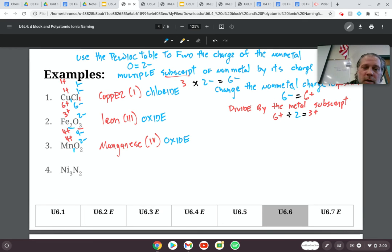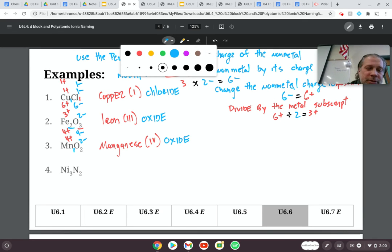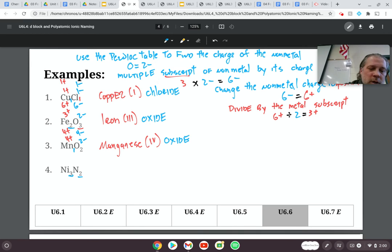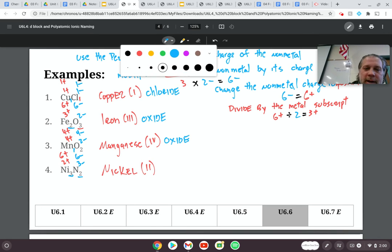Lastly, my ratio here is three to two. I notice that nitrogen on the periodic table has a charge of minus three. So nitrogen is going to be a minus three. Minus three times two is minus six. Change minus six to a plus six. Divide by three. And I get a plus two for nickel. So that means that nickel is Roman numeral two and it's nitride.